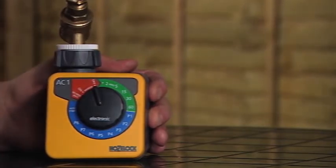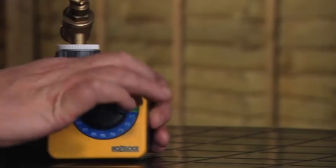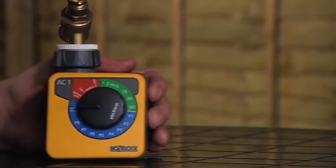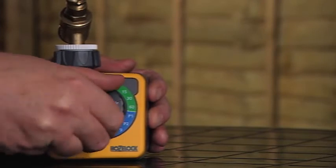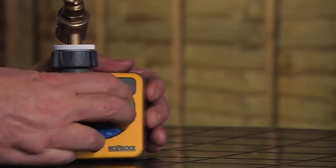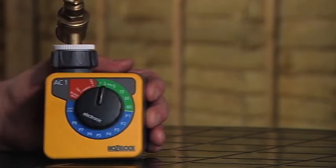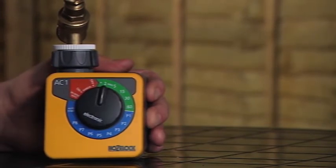Once we've decided that, we then turn the dial around to the auto start position like so. When we've done that, we select it back to the number of minutes or the program that we've decided on, and the timer will then start to burst into life.